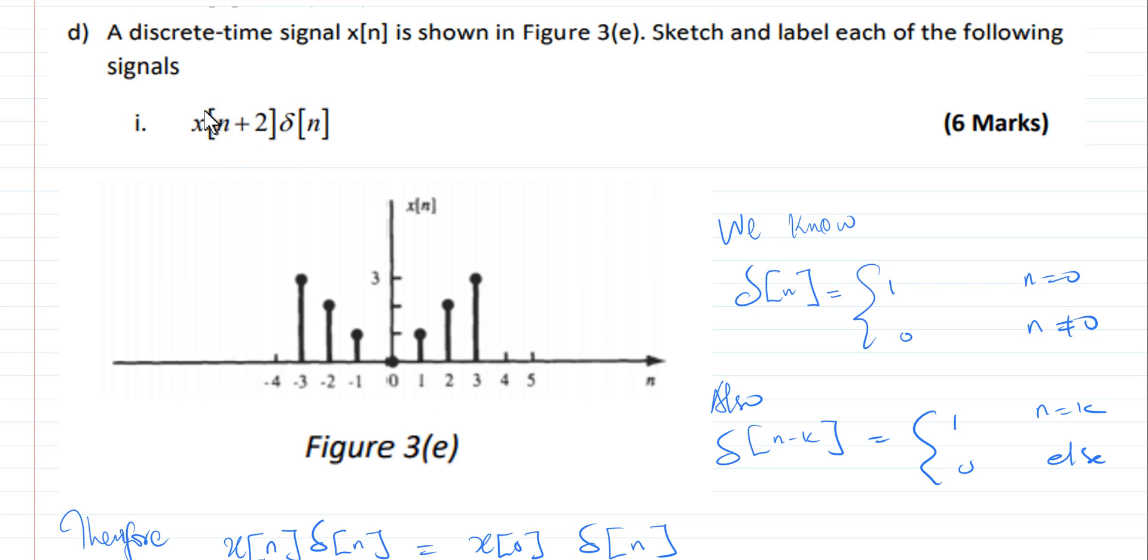This problem reads a discrete time signal x of n, which is shown in this figure. The question now reads sketch and label the following signal, which is x of n plus 2 delta of n.